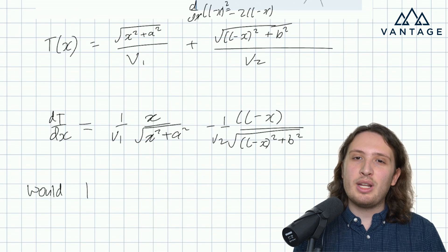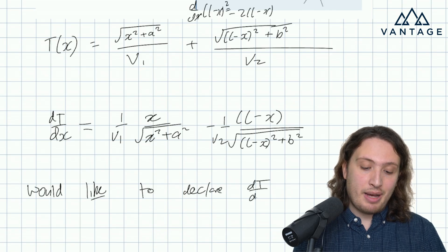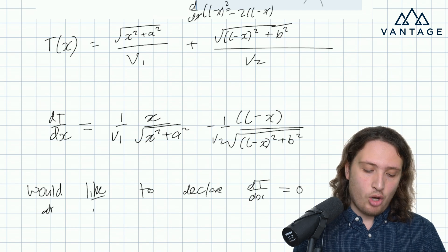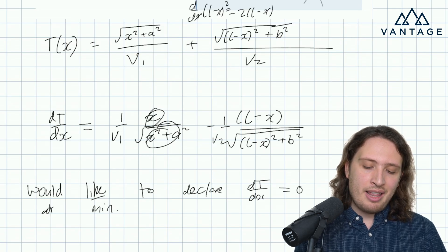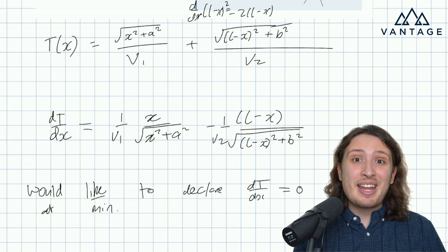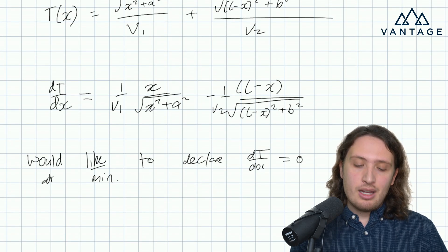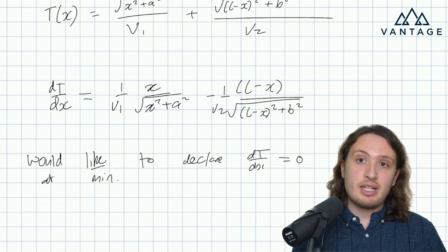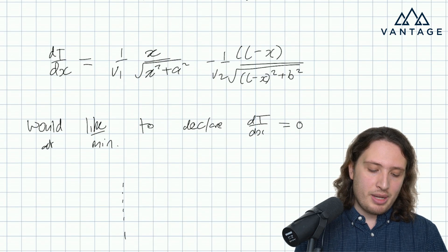We would quite like to declare that dt/dx equals zero at the minimum. That gives us a constraint. These expressions look a bit like lengths over lengths — they might turn into sines, which should make us think of Snell's law. So in general this looks quite promising. But we don't know for sure that at the minimum we're at a turning point. The global minimum — the lowest value the function ever takes — sometimes might not be at a turning point.